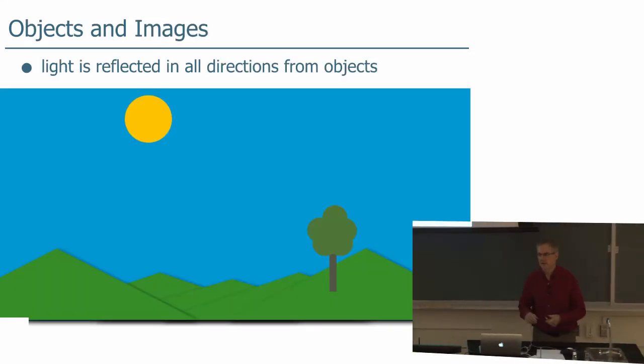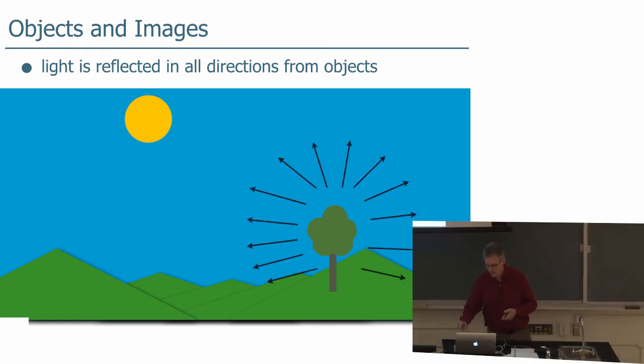So here we are outside on a bright sunny day. The hills are green, the trees green, and you can see everything because there's light. And there's light coming from, let's say, this tree, and it's going off in all directions.